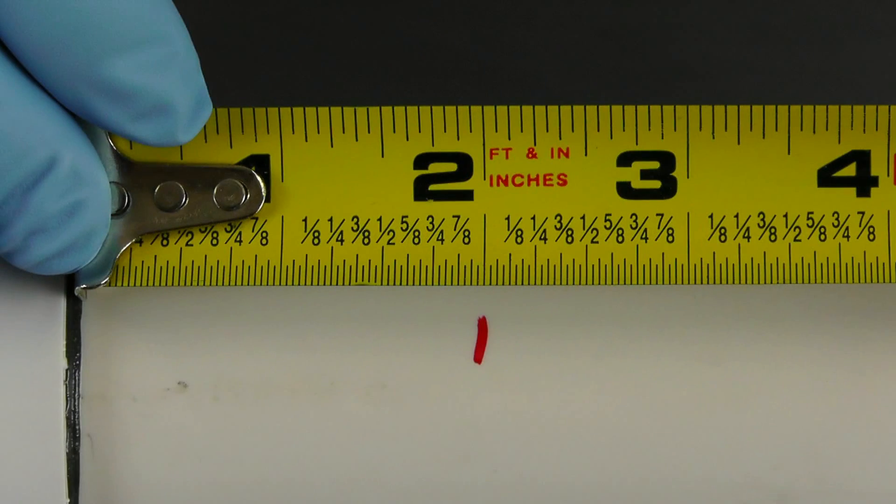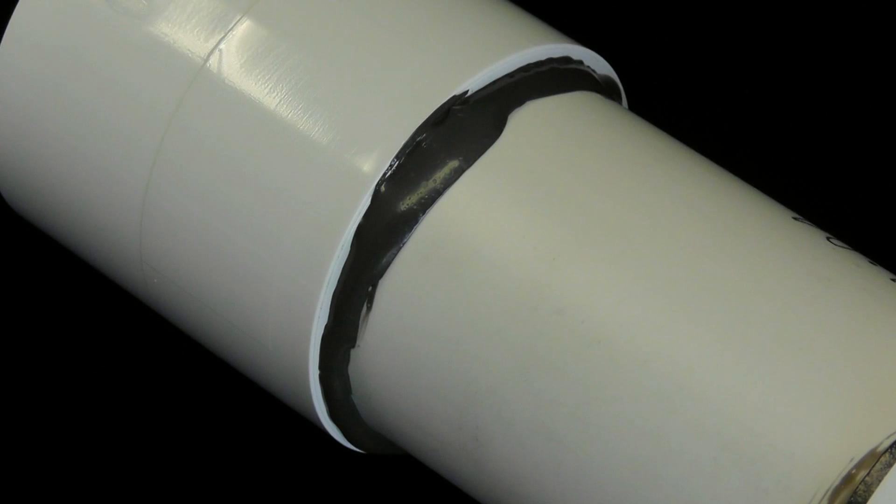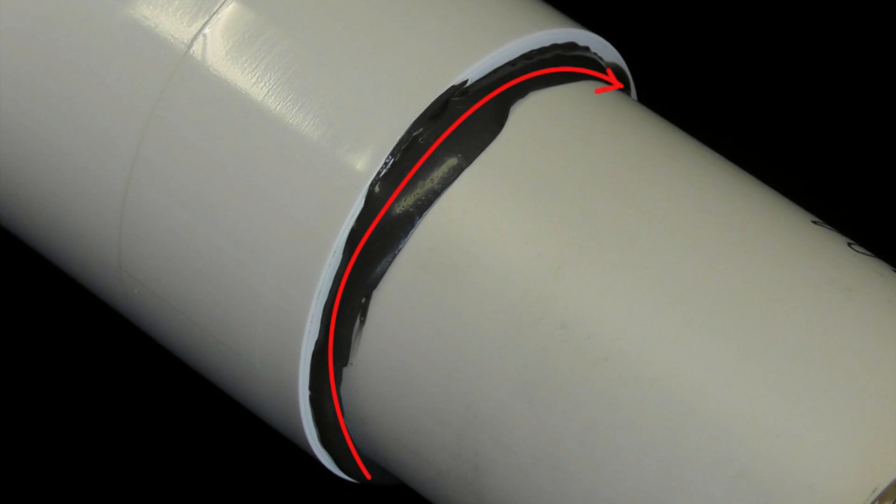Inspect the joint. Measure from the socket entry to the second mark made on the pipe. This distance should be 2 inches which confirms that the pipe is bottomed out inside the fitting. Next, confirm that there is a visible and consistent solvent cement bead between the pipe and socket all the way around the joint. Any visible cement gaps may indicate insufficient cement applied or a light body cement improperly used on a large diameter pipe.